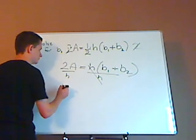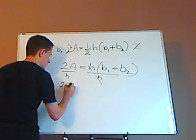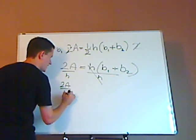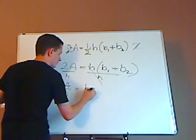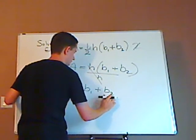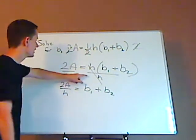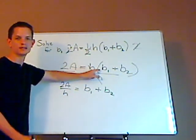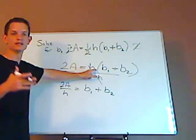So the H's cancel out. That leaves you with 2A over H equals B1 plus B2. Again you're dividing because it's H times this and the opposite of multiplication is division.